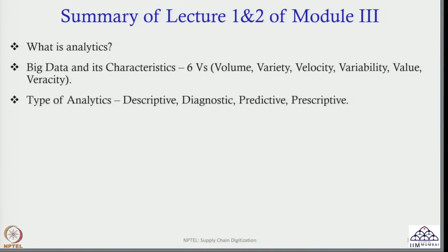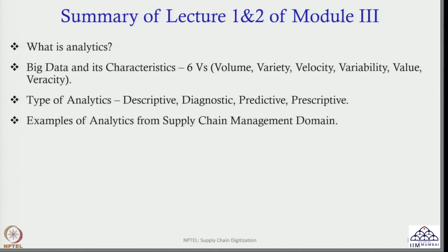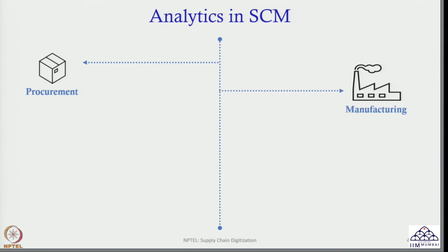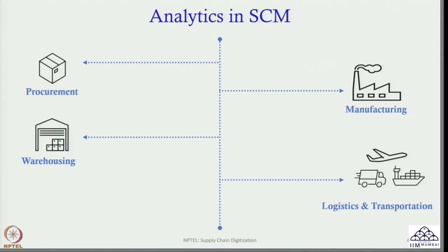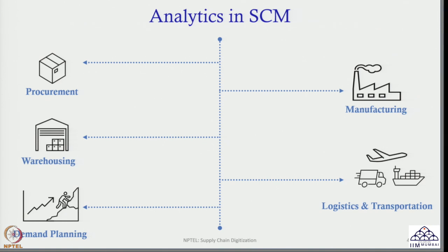We also discussed the types of analytics: descriptive, diagnostic, predictive, and prescriptive. Finally, we gave examples of analytics from the supply chain management domain — specifically from procurement, manufacturing, warehousing, logistics and transportation, and demand planning. These are the five main pillars of supply chain management, and we discussed how analytics can be applied to each.